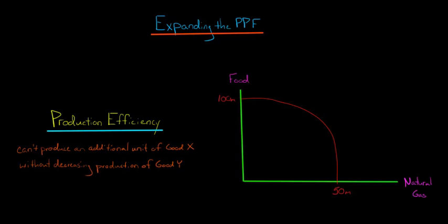In this video, we're going to discuss how the production possibilities frontier can be expanded. So let's say we had an economy that produces food and natural gas. And if this economy focused strictly on producing food, it would produce 100 million tons of food.